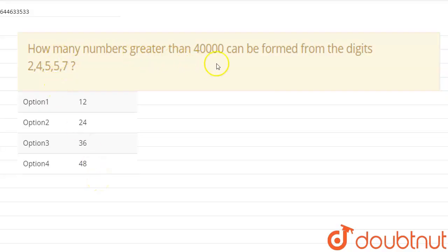How many numbers greater than 40,000 can be formed from the digits 2, 4, 5, 5 and 7? So we are given five digits: 2, 4, 5, 5 and 7. From this we have to form numbers that are greater than 40,000.